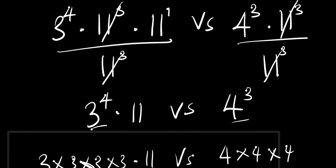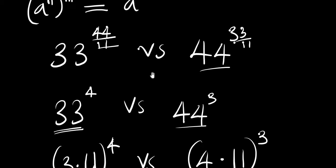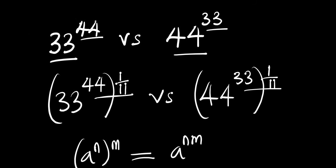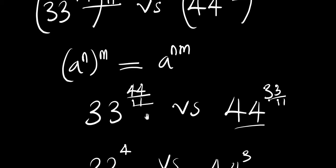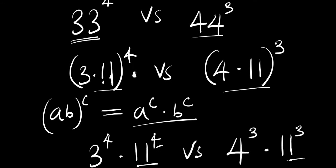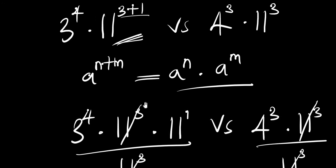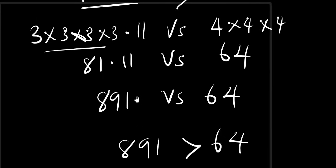Comparing these, we find that 891 is greater than 64, meaning that 33 raised to the power of 44 is greater than 44 raised to the power of 33. That is it for this video. I believe you enjoyed this class — please give me a thumbs up, like the video, and drop a comment if there is any point you don't understand. I will definitely give you an answer. Thank you and goodbye.